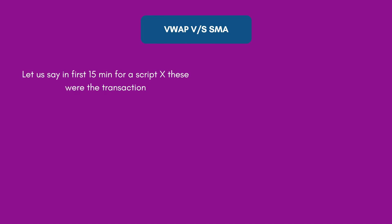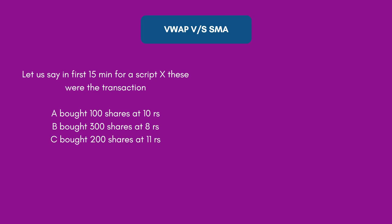To explain how VWAP differs from a moving average, let's do a quick comparison of VWAP versus Simple Moving Average. Suppose in the first 15 minutes of script X: in the first 5 minutes, A bought 100 shares at ₹10; in the next 5 minutes, B bought 300 shares at ₹8; then C bought 200 shares at ₹11. When calculating SMA, we ignore quantities and just look at prices: (10 + 8 + 11) / 3 = 9.66.